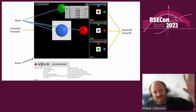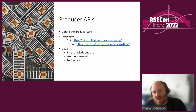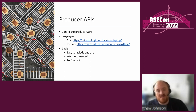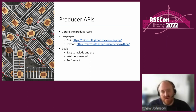These JSON elements have to come from somewhere. You need producer APIs that act like compilers, producing these JSON commands. We provide and maintain implementations in C++ and Python. Our goals were to make them easy to include in your own projects, well-documented so people can use them without much hand-holding, and performant — so producing a ScenePic costs no more than producing an image or video for visualization.